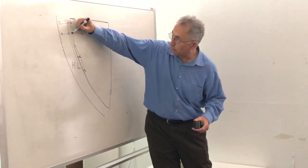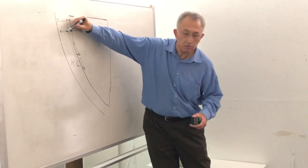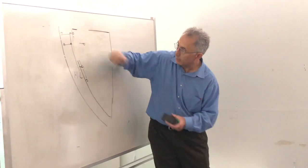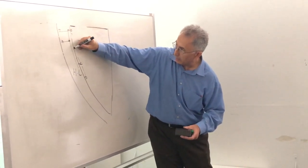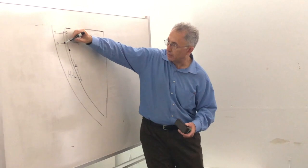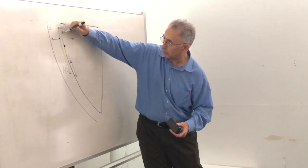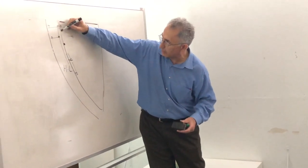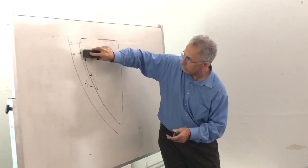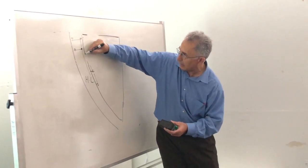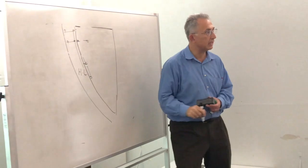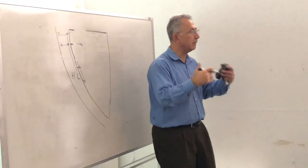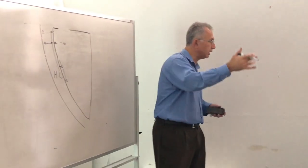Sometimes it makes sense to put new columns right next to the existing column; otherwise, if you offset them, you create an obstacle course of columns. By lining up the columns, they hide behind each other, have less impact on your circulation, and everything else improves.